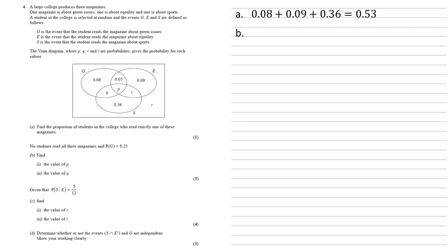No students read all three magazines and the probability of G equals 0.25. So using this information we need to find the value of P and the value of Q. The value of P is right in the middle there. That is everyone who reads all three magazines because it's within all three ovals. But we're told that nobody reads all three magazines so P is equal to zero.